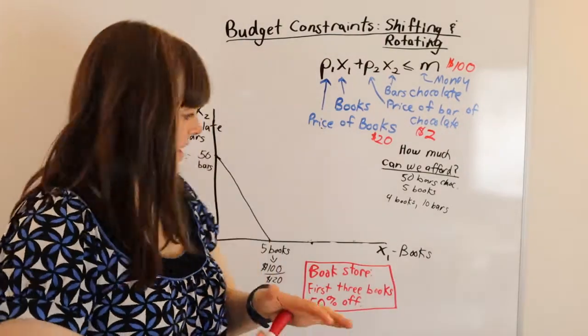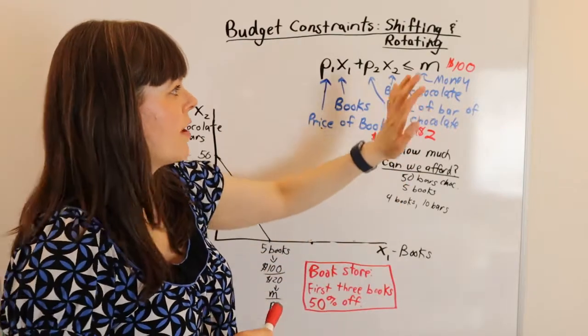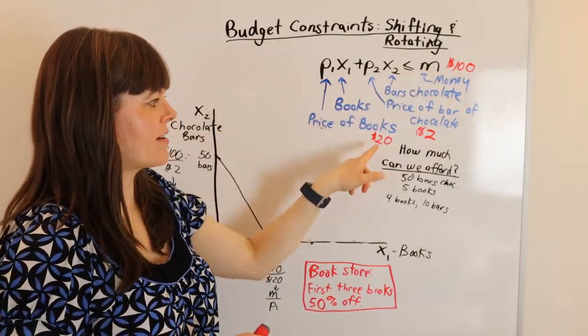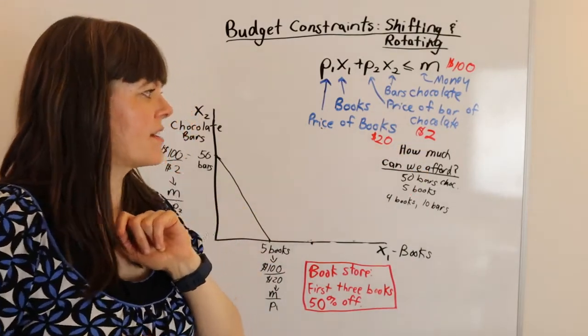All right, to think about kinking, we are back to our normal scenario, our original scenario, where we're using the $100 amount of money we've got, the price of books at $20, and the price of chocolate bars at $2.